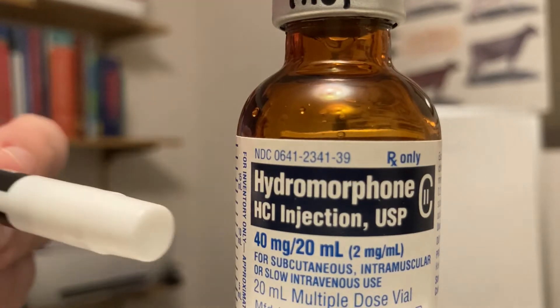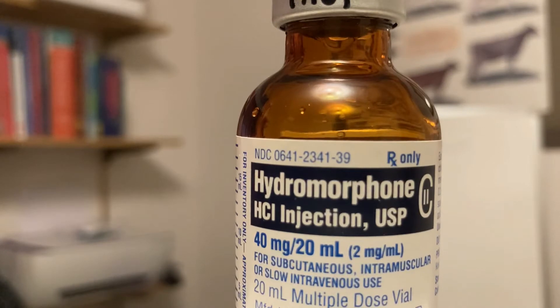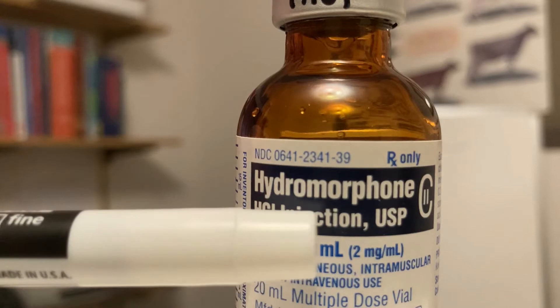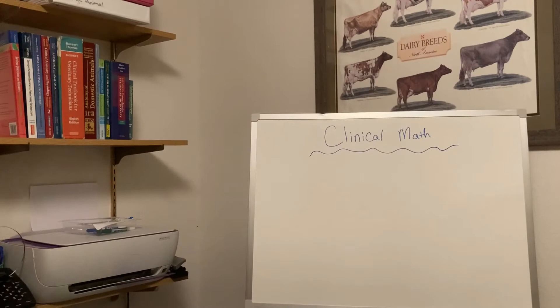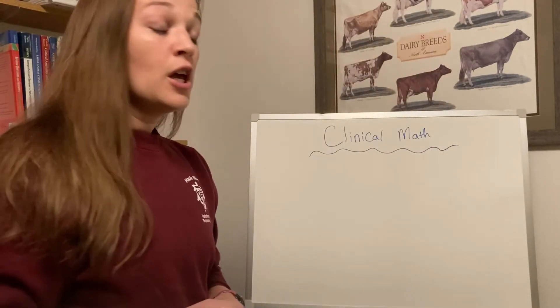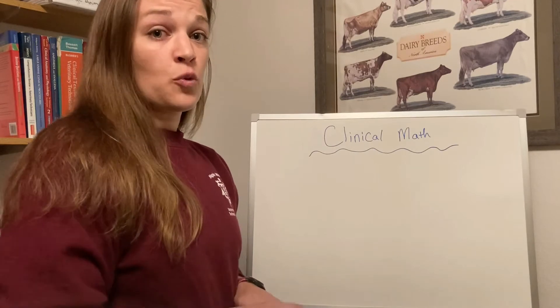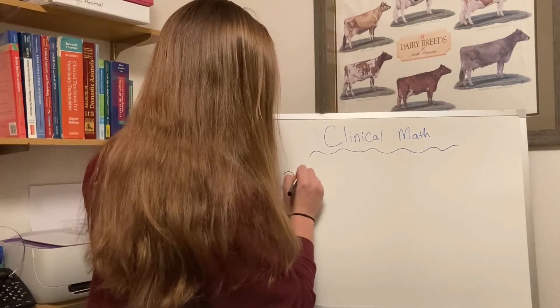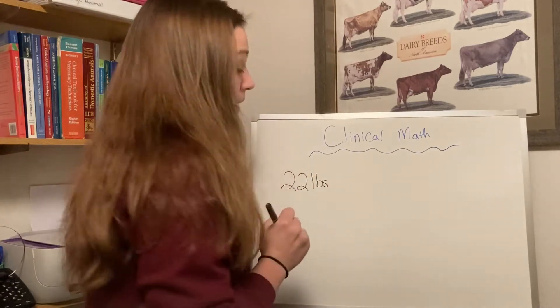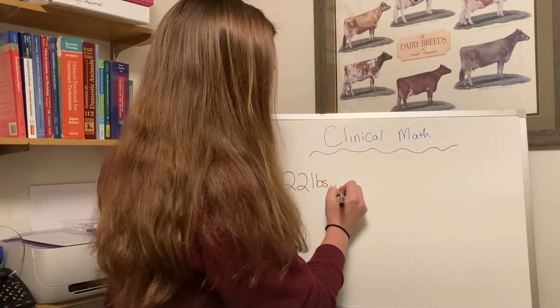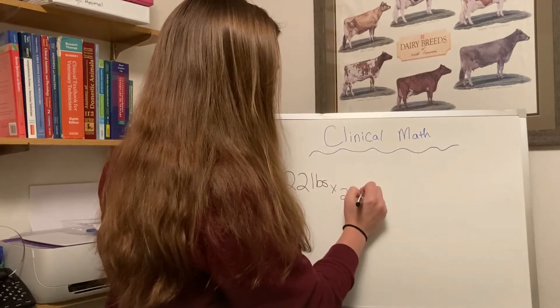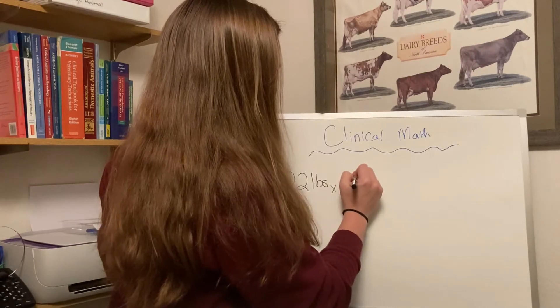The 40 mg per 20 mL is telling us there are 40 total milligrams of the drug in the full 20 mL bottle. The simple way to use that in our math is over here in the parentheses where it says 2 mg per mL. So we've determined that this drug has a concentration of 2 mg per mL. Let's say our example patient weighs 22 pounds. Now we'll go ahead and set up our dimensional analysis. 22 pounds, there are 2.2 pounds per kilogram of weight.